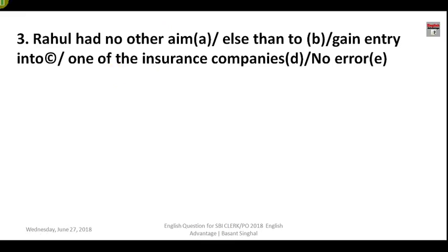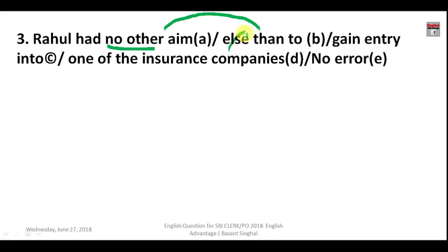Question number three: 'Rahul had no other aim else than to gain entry into one of the insurance companies.' Here, 'no other' being a comparative degree is always followed by 'than' — it is not 'else than', it is only 'than'. So this part is wrong, and the answer is B.